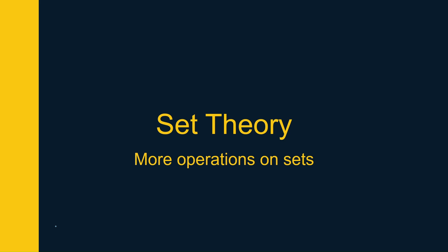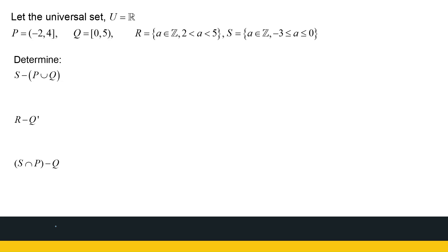We're busy looking at operations on sets. In the previous video, we looked at some basic operations. Now we're going to combine some operations. Here we have four sets: P, Q, R, and S. If you prefer learning visually, let's put them on a picture. We're told the universal set is all real numbers — from minus infinity to infinity, all of them.